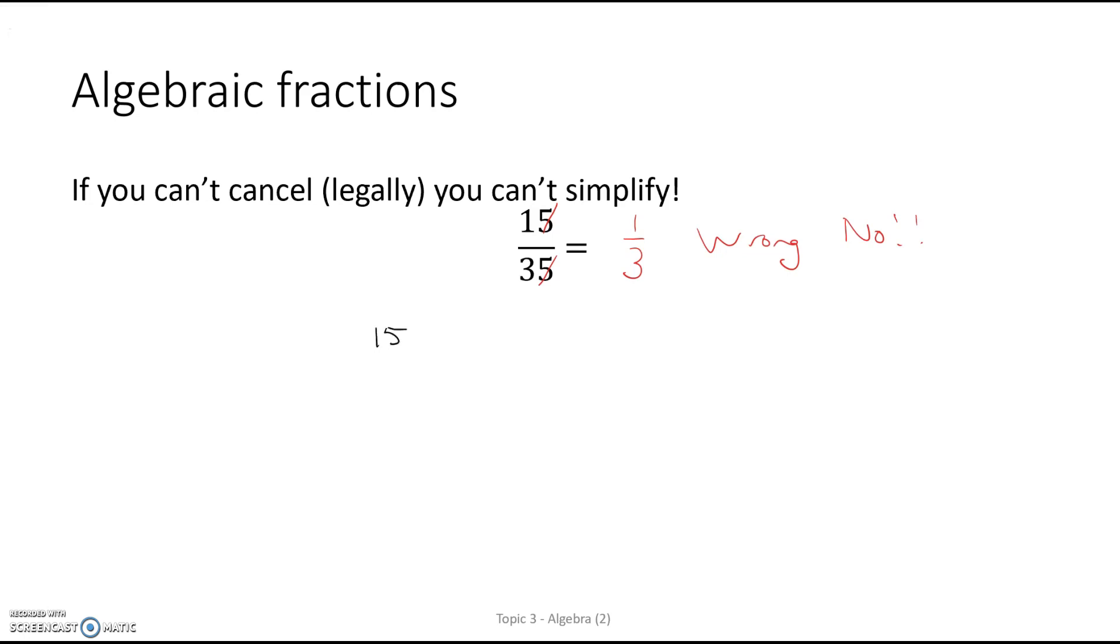We've got 15 over 35. Now we can rewrite that as 5 times 3 over 5 times 7. Now we can see that we've got a common factor of 5, and we're left with the answer of 3 over 7. So what we did was, we looked for the highest common factor, found that it was 7.